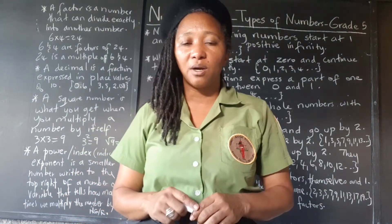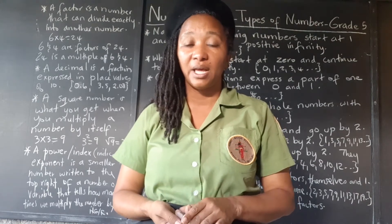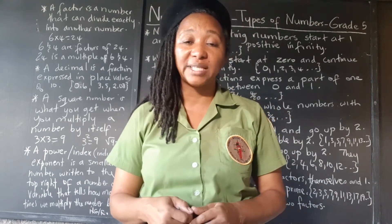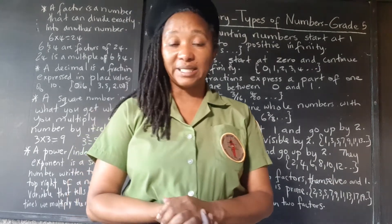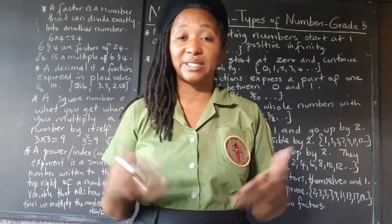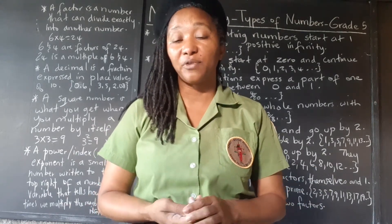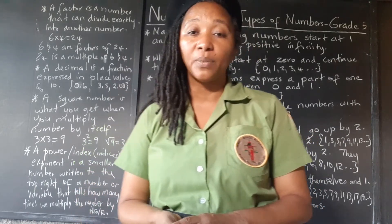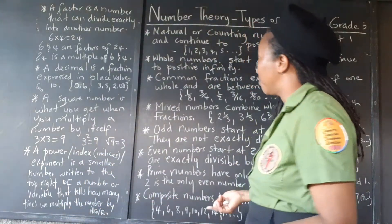Good morning scholars, welcome back to the channel. This morning we're going to look at number theory at the grade 5 level. In other words, we're looking at types of numbers that we're going to be exposed to as we do mathematics. So we need to know — mathematics is about numbers, shapes, measurements and so on. So we have to know what are the different types of numbers. I'm going to read the definitions and explain as I go along what each kind of number is.